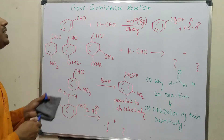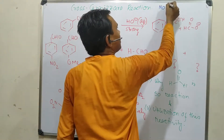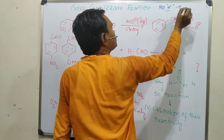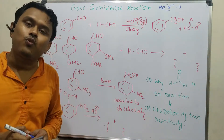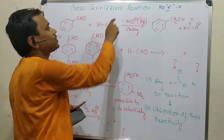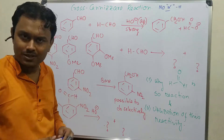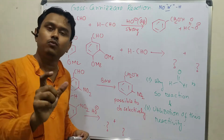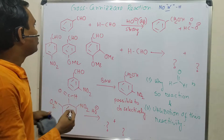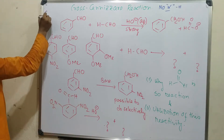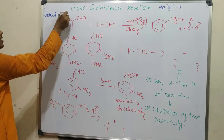Cross Cannizzaro reaction involves two different types of aldehydes, both having no alpha hydrogen — that is the basic criteria, and all other conditions are the same. The key advantage of the cross Cannizzaro reaction over the normal Cannizzaro reaction is selectivity: we can selectively reduce or oxidize a particular compound.